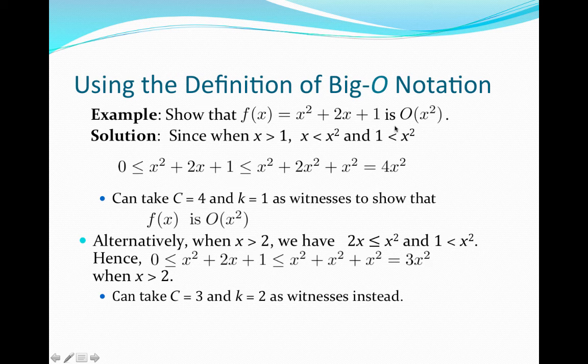Remember that all we need to do is find witnesses for this. So we need to find a constant c and a constant k so that our function f of x is less than or equal to c times x squared for every x bigger than k. There are two different ways we can do this, and I'm going to show you both ways — and there may be more as well.